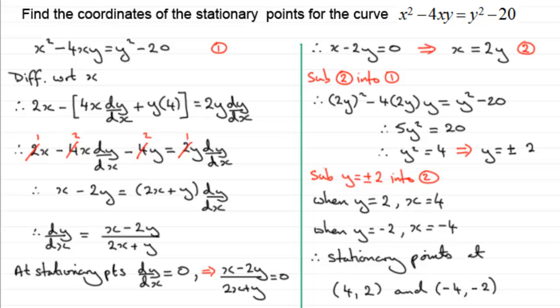So I hope that gives you some understanding of how we can go about this, then, for finding stationary points for an implicit equation.